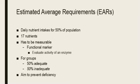The Estimated Average Requirements, also known as the EARs, are the daily nutrient intakes for half of the population. There are 17 nutrients that have estimated average requirements set. There has to be a functional marker for the nutrient to be analyzed if the nutrient intake is adequate — this can be done by evaluating the activity of an enzyme. EARs are used for groups, not individuals. This means that in a group, 50% will have an adequate amount of that nutrient and 50% will have an inadequate amount.